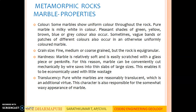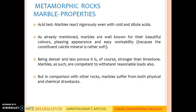Hardness: Marble is relatively soft and is easily scratched with a glass piece or penknife. For this reason, marble can be conveniently cut mechanically by wire saws into thin slabs of large sizes, enabling it to be economically used with little wastage. Translucency: Pure white marbles are reasonably translucent, which is an additional virtue. This character is also responsible for the somewhat waxy appearance of marble. Marbles are well known for their beautiful colors, pleasing appearance and easy workability. Because the main composition of marble is calcite, which is relatively soft.